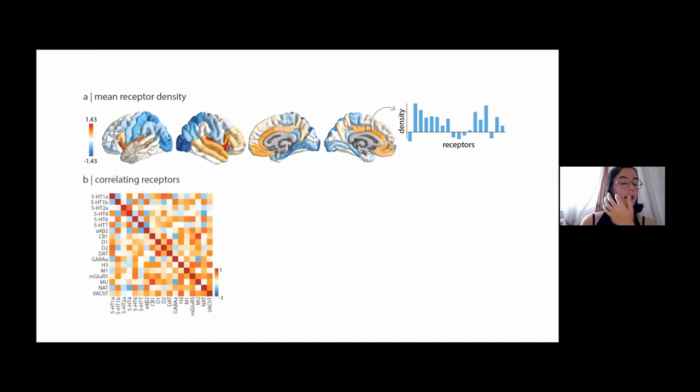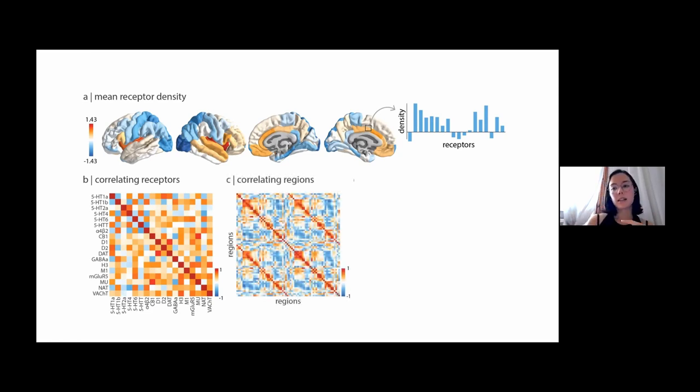We can do some more things with this dataset, for example, correlating them across the receptors themselves. This would be the cortical distribution of one receptor correlated to all other receptors and then for each receptor. You can see they're generally positively correlated to one another, but there is some variability there.